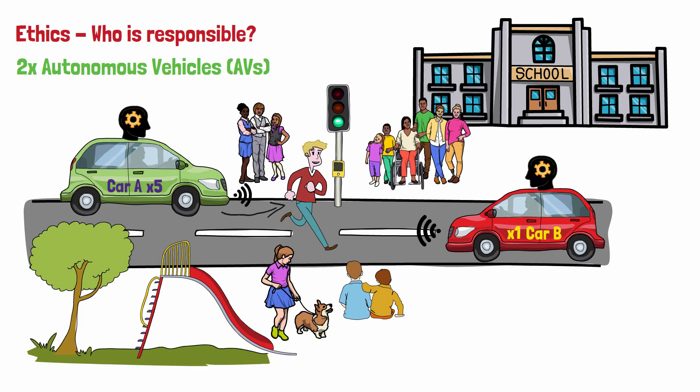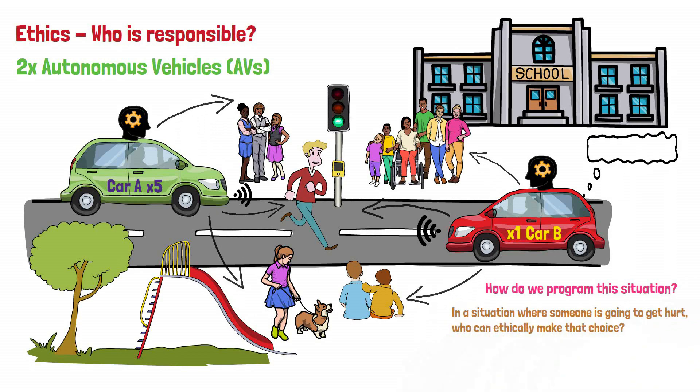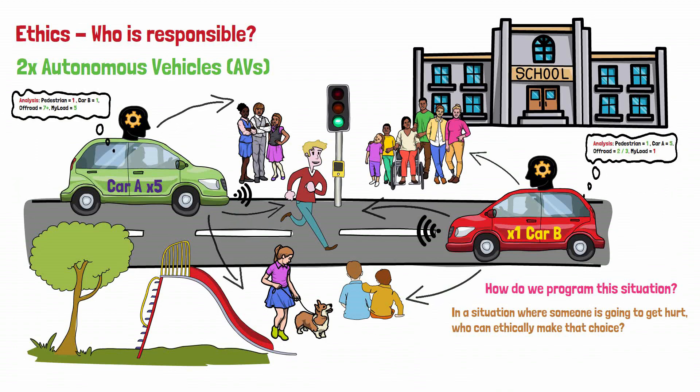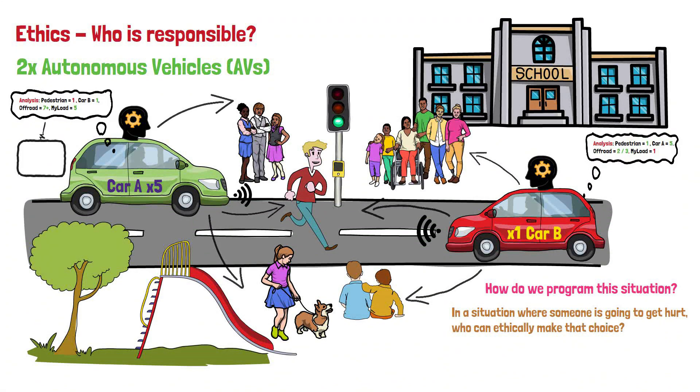Both car A and car B's AI systems must make a quick decision about what to do. If they continue forward, they will hit the pedestrian. If they swerve to avoid the pedestrian, they may cause a collision with the other vehicle. In this scenario, if both vehicles' AI systems are programmed to prioritize safety of their passengers, car A may choose to continue forward, as it has more passengers to protect.